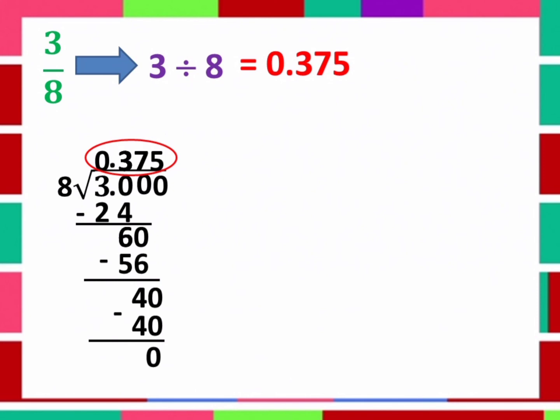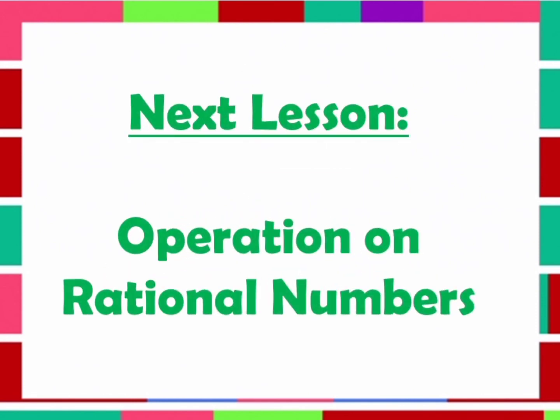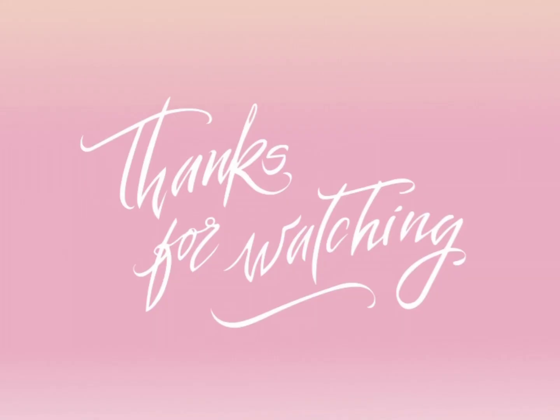Therefore, 3 over 8 is equal to 0.375 in decimal. Always remember: if you can't convert a fraction using the place value chart, make an equivalent fraction. And if a fraction cannot be converted to an equivalent fraction with a base 10 denominator, you can use long division to convert it to decimal. That's all for today. Next lesson: Operations on Rational Numbers. Thank you for watching.